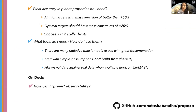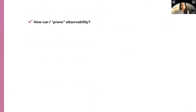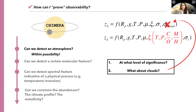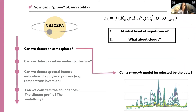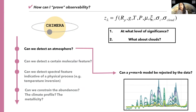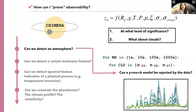We've deemed what accuracy and planet properties we need. We've looked at some initial tools and determined the procedure for running those codes. Now finally, we can address how to actually prove observability. For transmission spectroscopy, the question of 'can we detect an atmosphere' really just translates to: can a Y equals MX plus B model be rejected by the data? For planets like TRAPPIST-1 or GJ 1214, even that simple model cannot be rejected. In the tutorial, I looped through three different cloud cross-sectional strengths and four different metallicities.